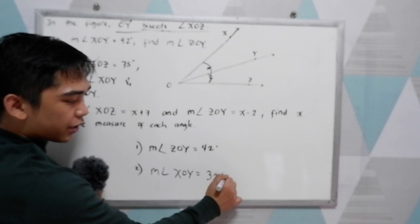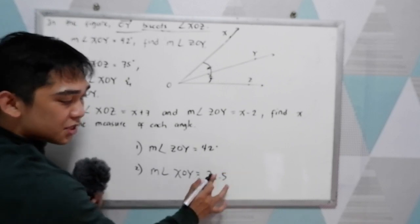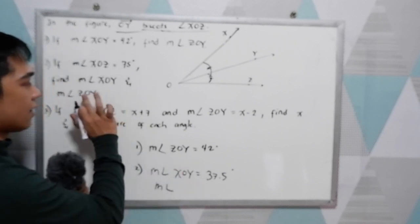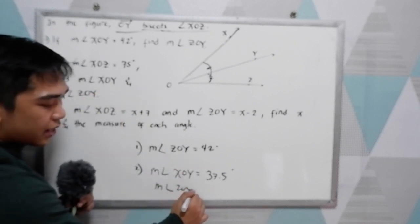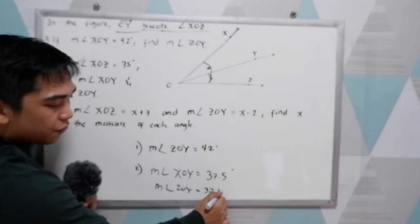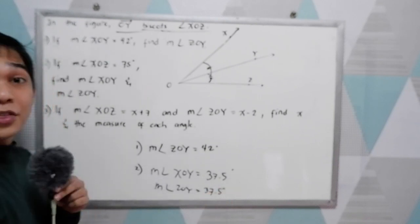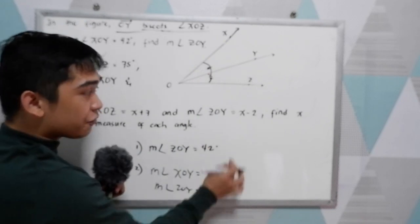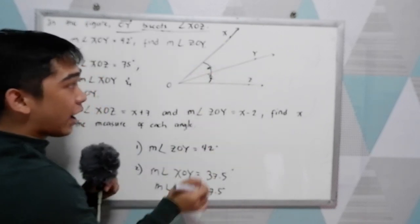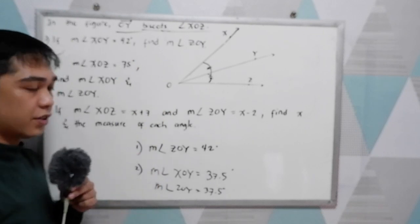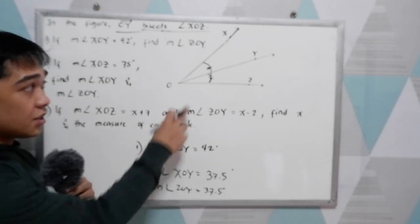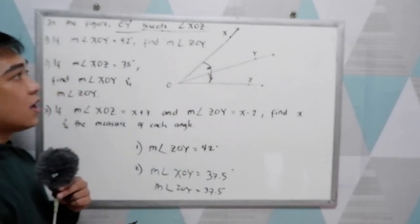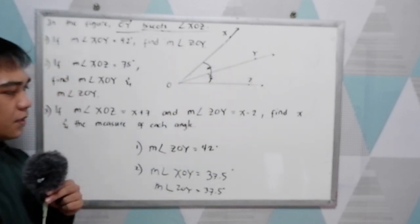So we just need to divide 75 by 2. So 75 divided by 2 is 37.5 degrees. Of course, measure angle ZOY is also 37.5 degrees because if we add 37.5 plus 37.5, that equals 75 degrees, and we know that they are the same because OY bisects our angle XOZ.